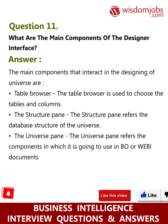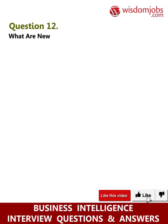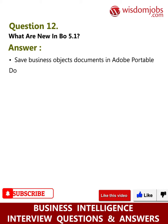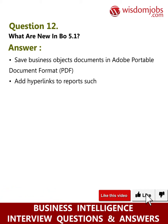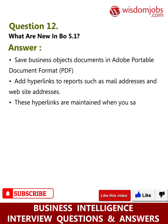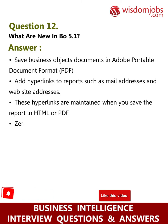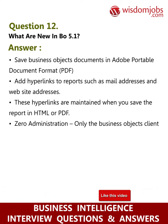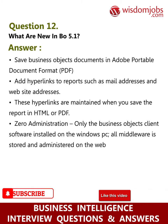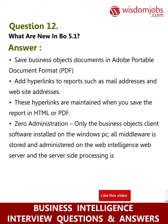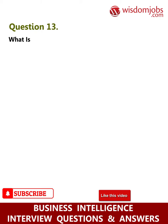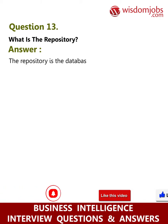Question 12: What is new in BO 5.1? Answer: Save Business Objects documents in Adobe Portable Document Format (PDF). Add hyperlinks to reports such as mail addresses and website addresses — these hyperlinks are maintained when you save the report in HTML or PDF. Zero administration — only the Business Objects client software is installed on the Windows PC; all middleware is stored and administered on the Web Intelligence web server, and server-side processing is handled by the Web Intelligence system.